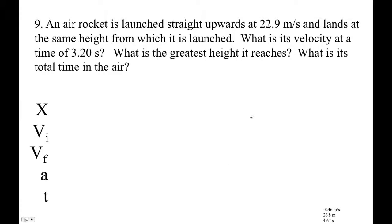All right, let's see - air rocket launched up. We know the initial velocity of the air rocket. We want to know its velocity at a time of 3.20 seconds, and then its greatest height and total time in the air. I'm going to do this as one separate problem, and then those other two are another separate problem.